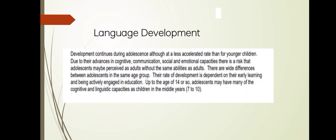Next is language development. Language development continues during adolescence, although at a less accelerated rate than for younger children, due to advances in cognitive, communication, social, and emotional capacities. There is a risk that adolescents may be perceived as adults without having the same abilities as adults. There are wide differences between adolescents in the same age group, and the rate of development is dependent on early learning and active engagement in education. After the age of 14 or so, adolescents may have many of the cognitive and linguistic capacities of children in the middle years of 7 to 10.